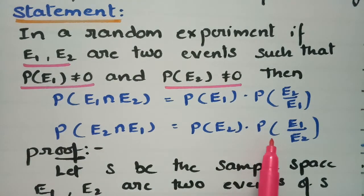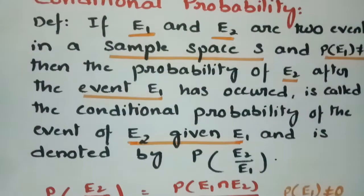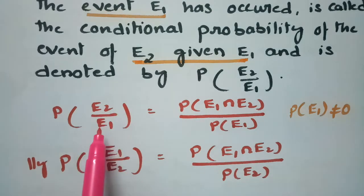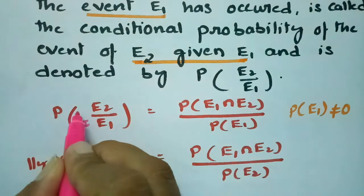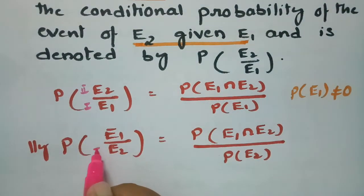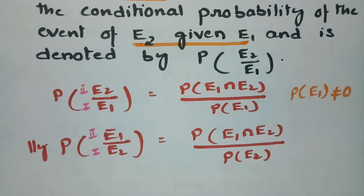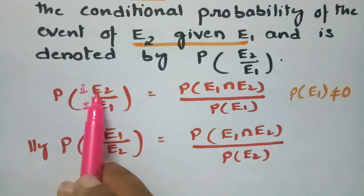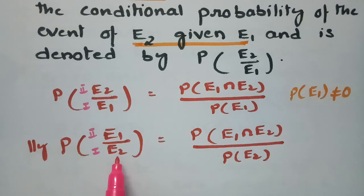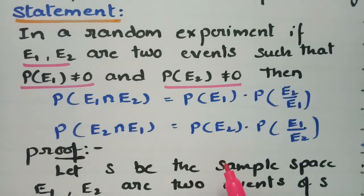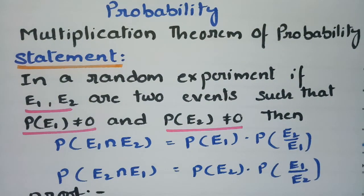According to the multiplication theorem, we use conditional probability. For P(E2|E1), event E1 must happen first — E1 is the first event and E2 is the second. With this condition we define conditional probability, read as P(E2|E1) and P(E1|E2). By cross-multiplying these conditional probability definitions, we directly obtain the multiplication theorem. Thank you for watching — please practice and share with your friends.